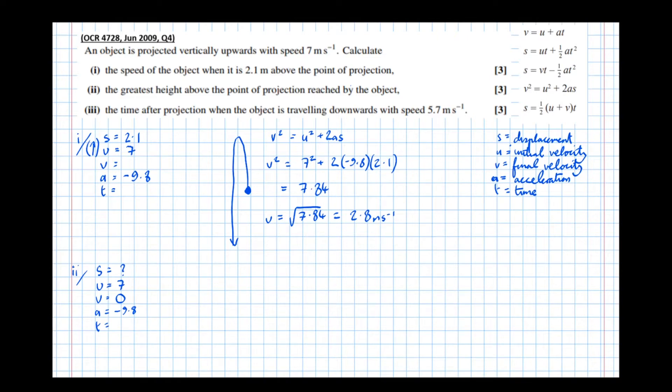So again, it looks like a v squared equals u squared plus 2as equation. V squared equals u squared plus 2as. And this one we will have to rearrange, but again, my suggestion is put the numbers in first. 0 squared equals 7 squared plus 2 minus 9.8s.